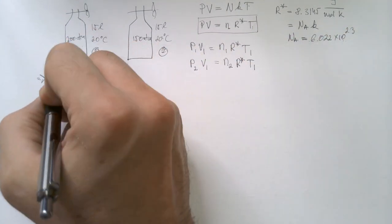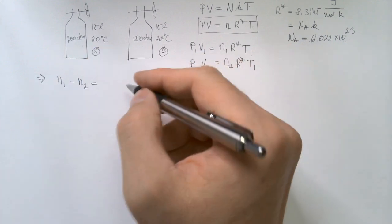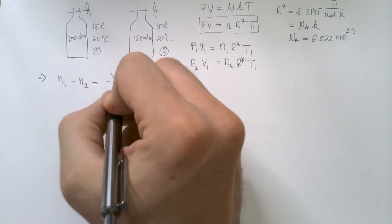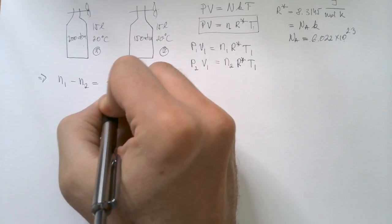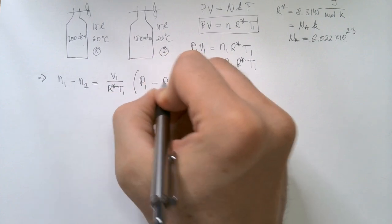From here, we see that N1 minus N2, if we subtract these equations is equal V1 over R star T1, P1 minus P2.